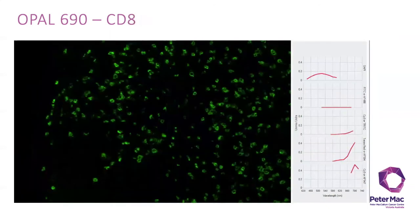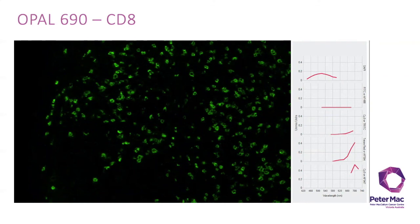And lastly opal 690 and a CD8 antibody were used to identify cytotoxic T lymphocytes shown here in green and the graph on the right shows an emission peak in the Cy5 channel and also in the Texas red filter.